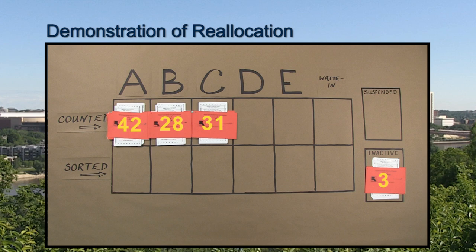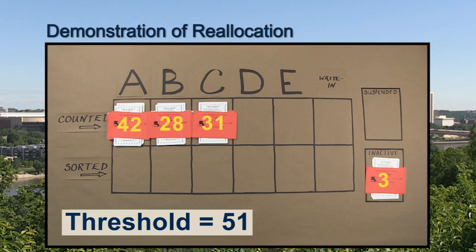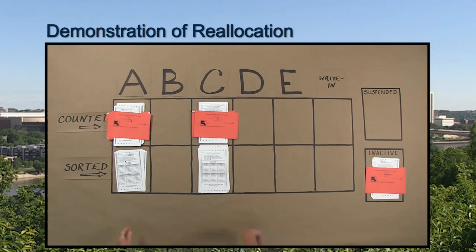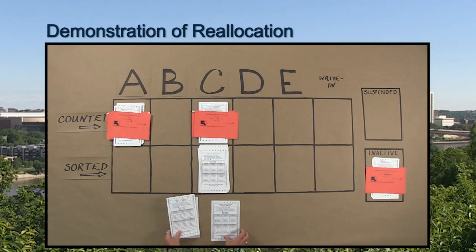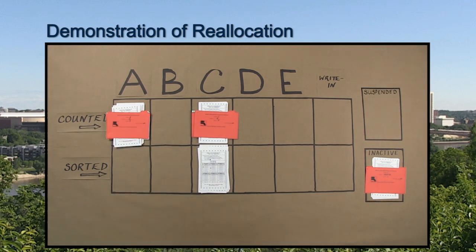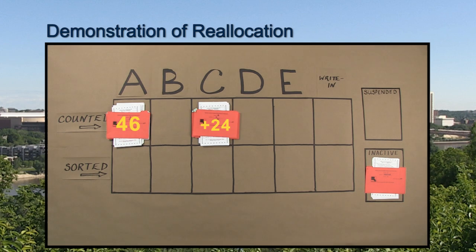Since no candidate has yet reached the threshold, another reallocation must occur. Because candidate B has the fewest votes of the remaining candidates, their votes are reallocated. Then the sorted ballots are counted and added to the candidate's previous vote totals. Candidate A gained 4 votes and now has a total of 46 votes. Candidate C received 24 votes and has a total of 55 votes. Because candidate C's vote total surpassed the threshold, candidate C is declared the winner of the election.